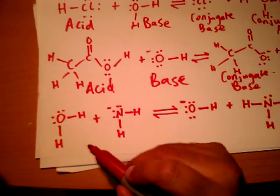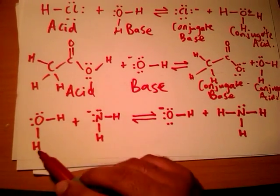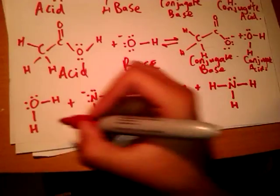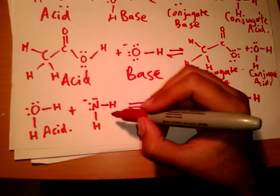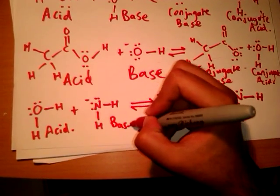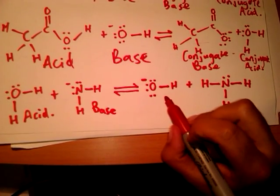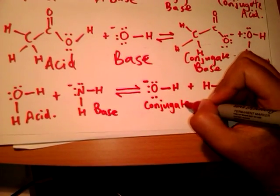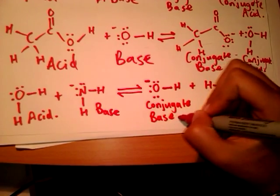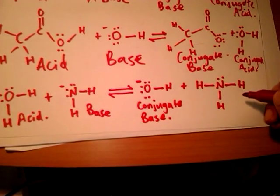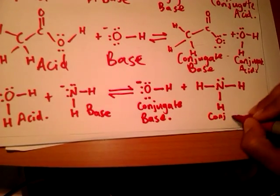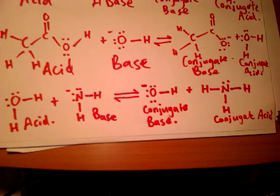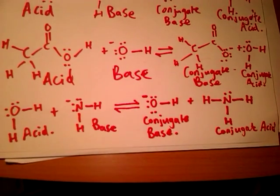Let's look at this one: water plus NH2⁻. We know that the water will donate its hydrogen atom, so water will be the acid in this case, and NH2⁻ will be the base because it will be accepting the proton. The hydroxide ion will be the conjugate base because it's the product resulting from the acid losing a proton, and the NH3 will be the conjugate acid because it's the product of the base gaining a proton.